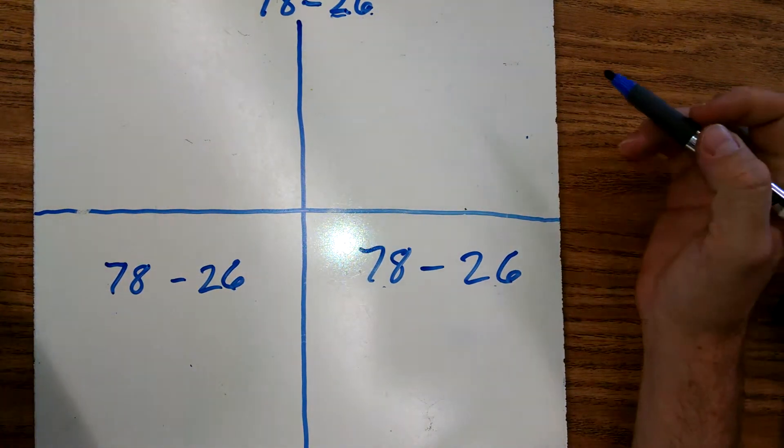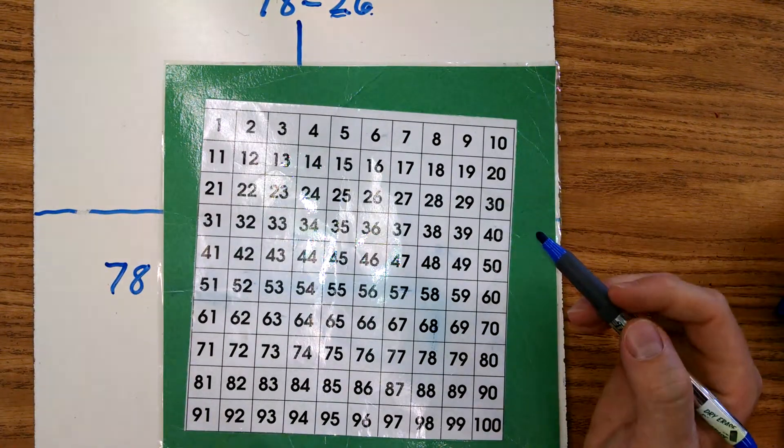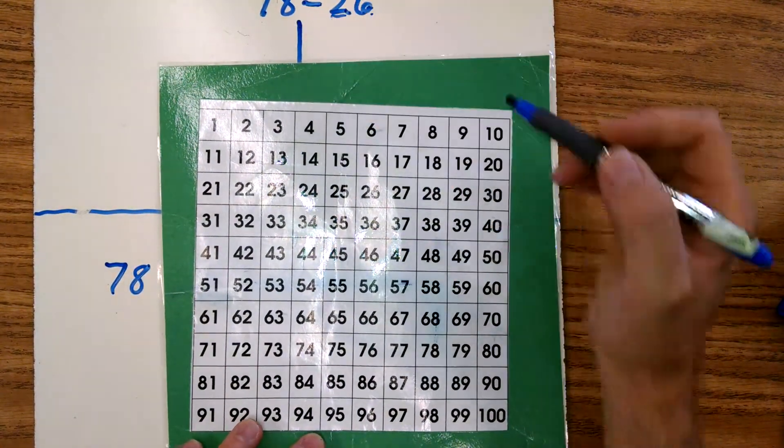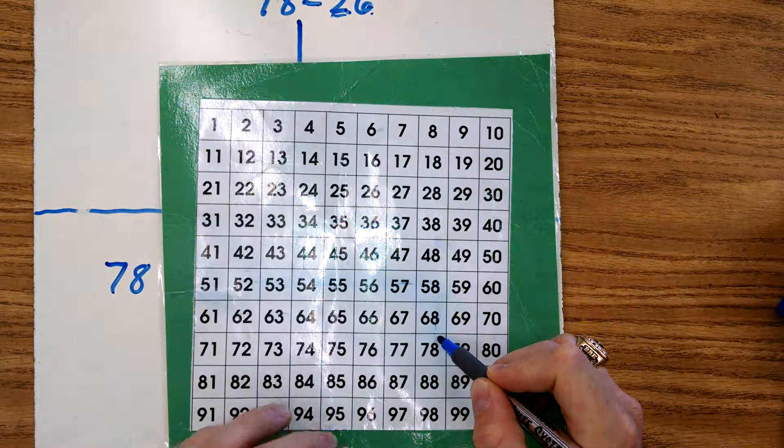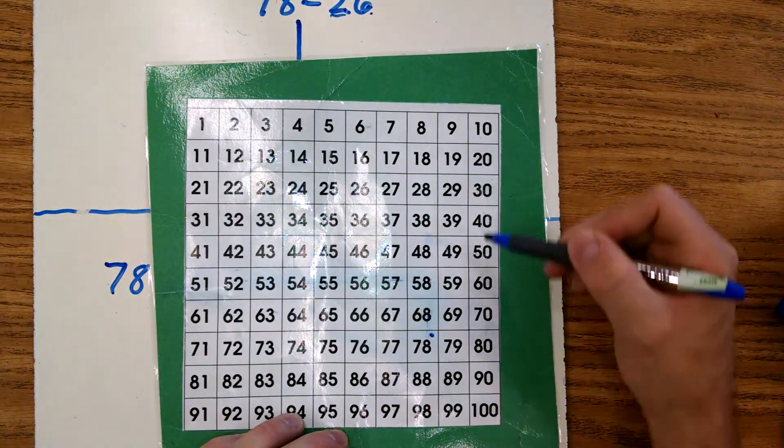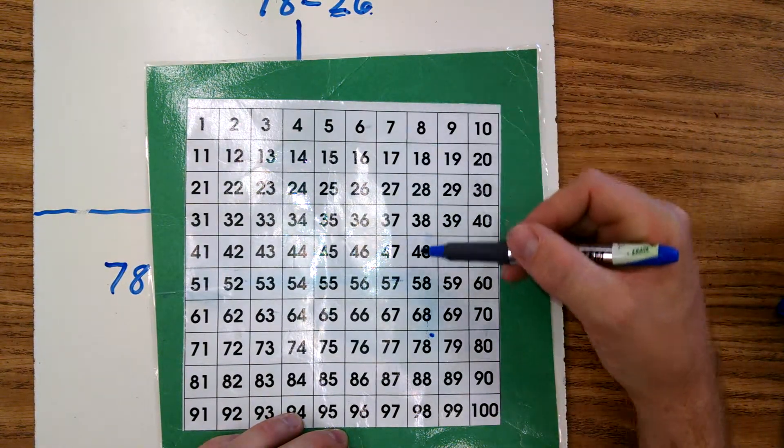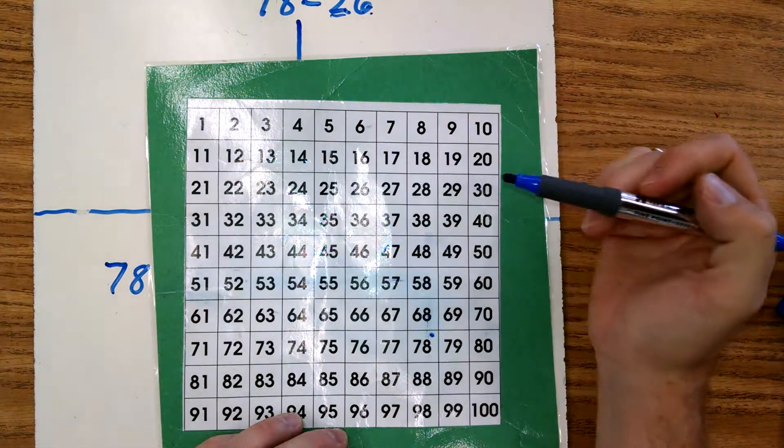So the first way that we're going to do it is 78 minus 26. We're going to use our hundreds chart. Starting at 78, we're going to go back two tens and then back six ones. On our hundreds chart, we'll count by tens by going up and down. We do that at any column. So our columns are tens and our rows are counting forward or backward by ones.